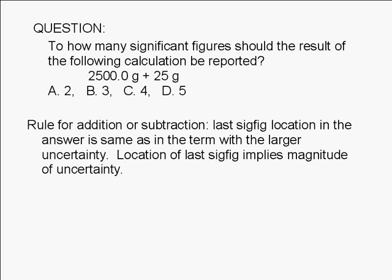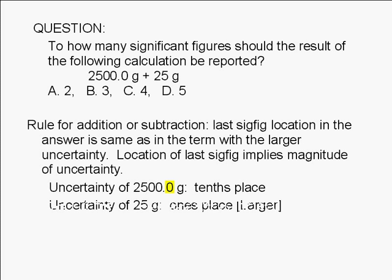In this case, let's examine the terms that we are adding. The last significant digit in 2,500.0 grams is in the tenths place. This means that the magnitude of the uncertainty in 2,500.0 grams is in the tenths place. For 25 grams, the last significant digit is in the ones place, meaning that the magnitude of the uncertainty in 25 grams is in the ones place.